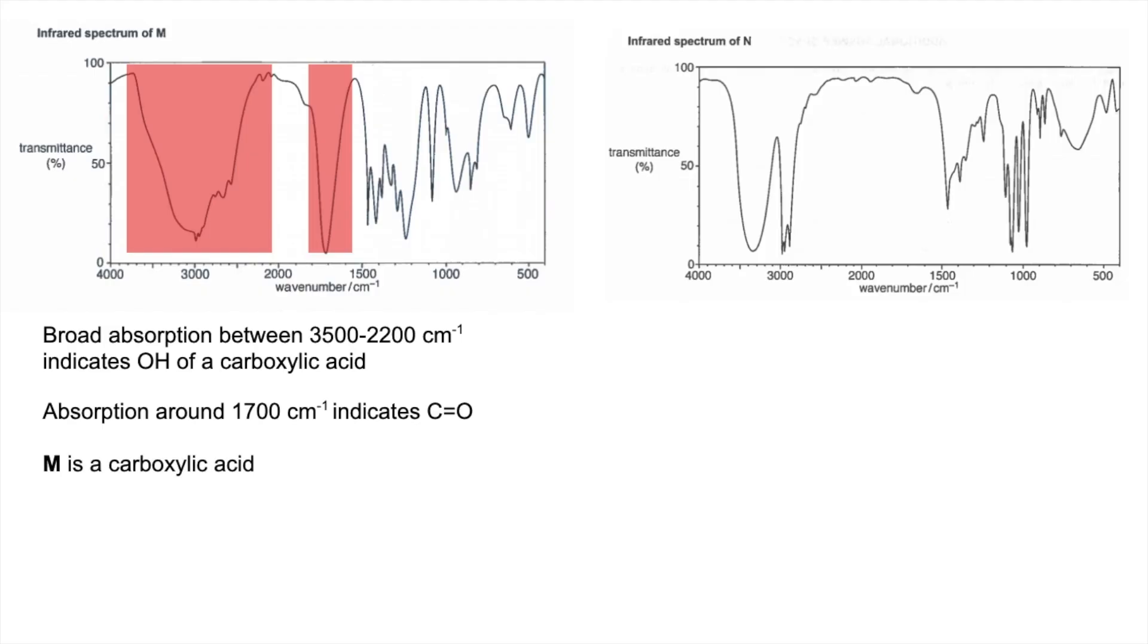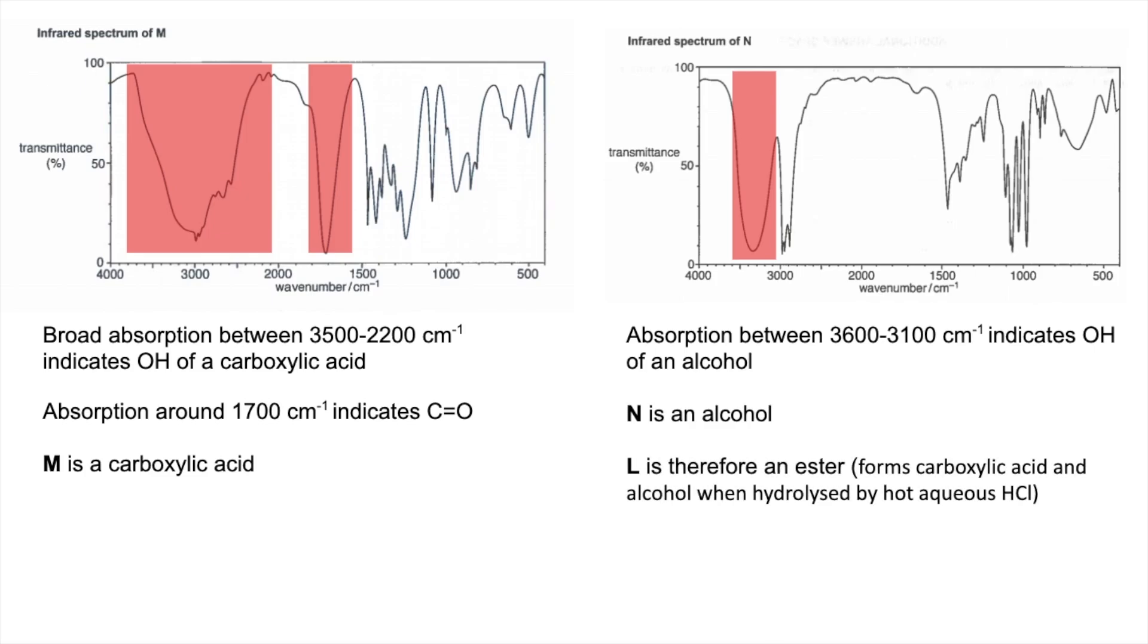So if we move on to the infrared spectrum for N, we've got one key absorption, that one there. That's the OH of an alcohol, so N's obviously an alcohol. So that's telling us that L must be an ester, because when it's been refluxed with hot aqueous HCl, it's hydrolyzed and formed a carboxylic acid and an alcohol.